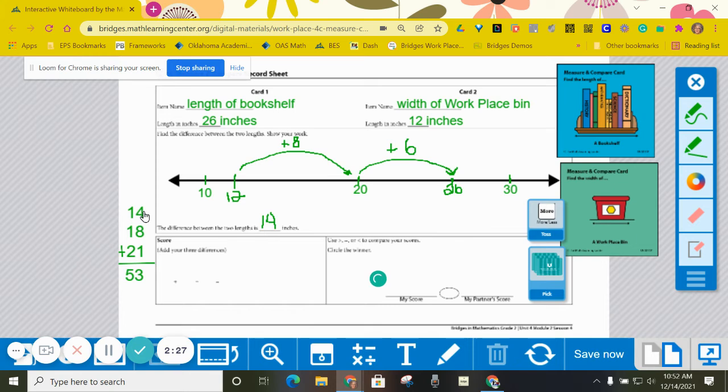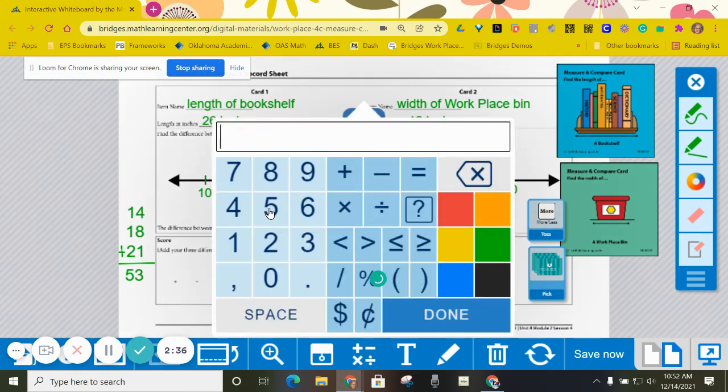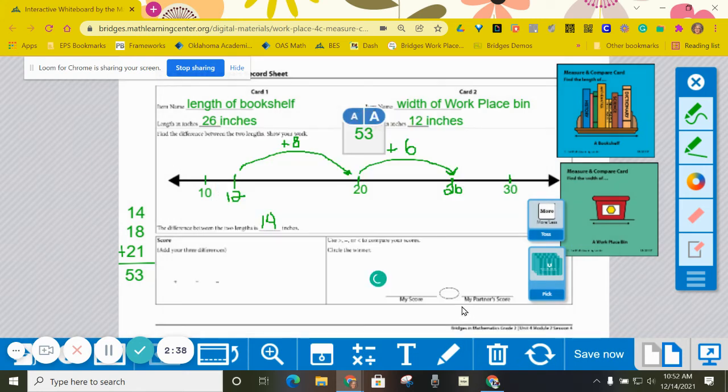I added my three differences together, and I got 53. So now this 53 goes here, where it says my score. You put that right there. You write in your partner score right there.